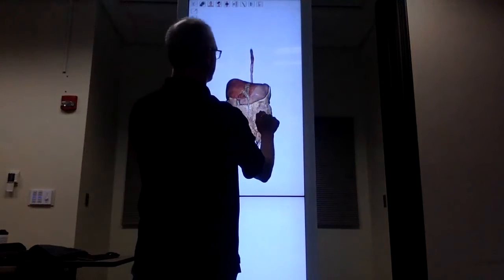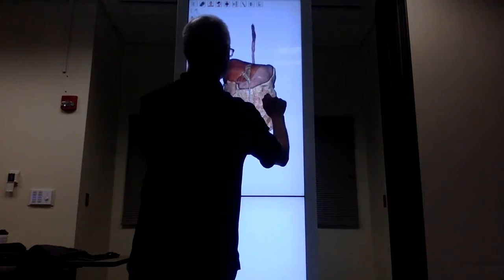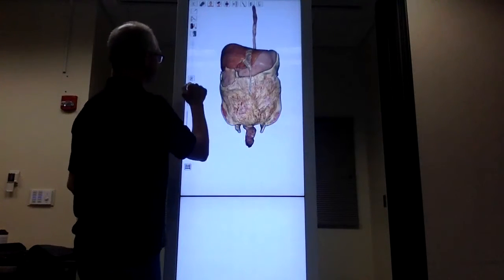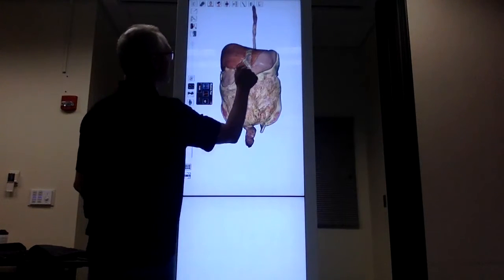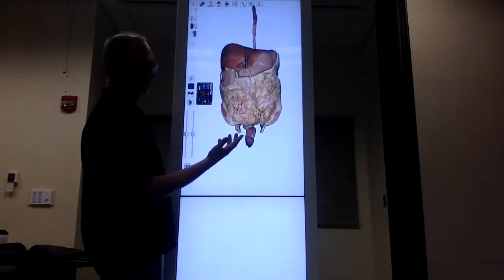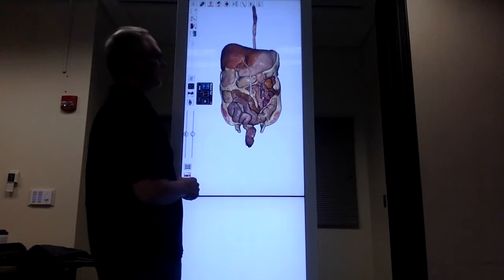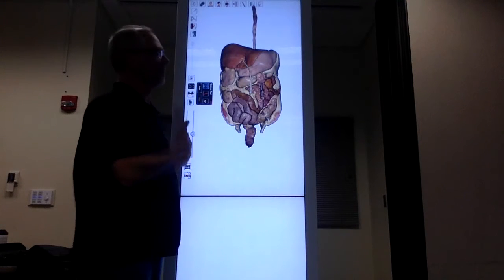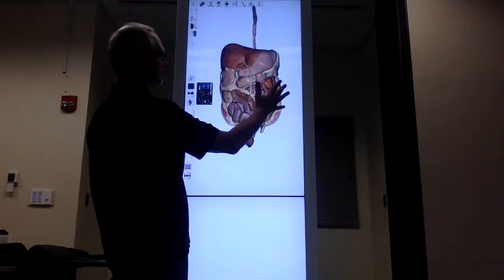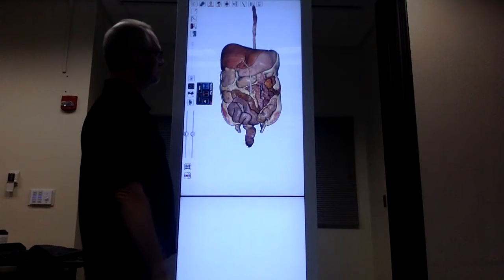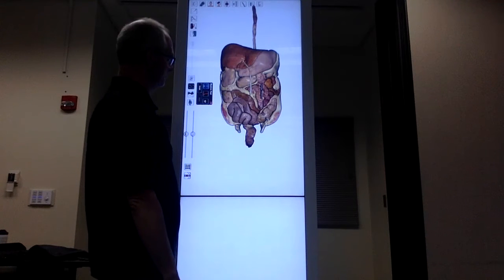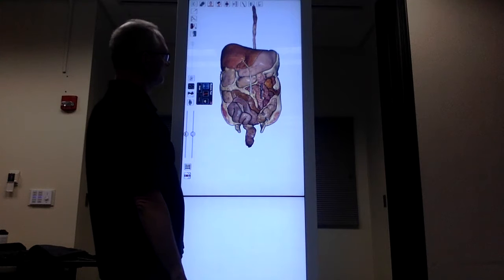If we look at it from this standpoint, we have this falciform ligament helping to hold the liver to the abdominal wall. We have that greater omentum, which is a fatty membrane pad that covers the anterior side of the digestive system.